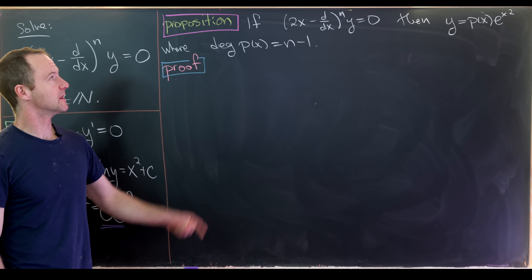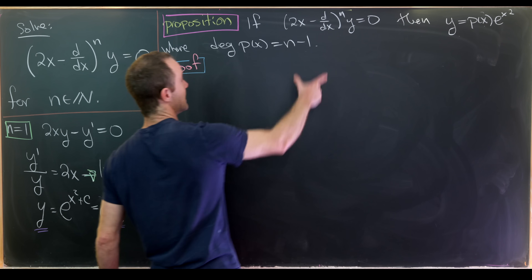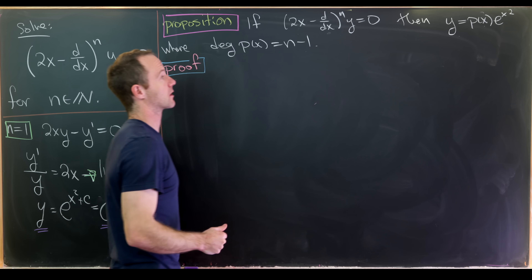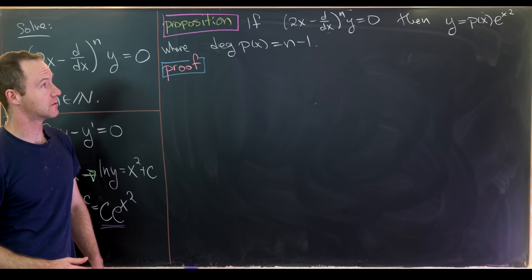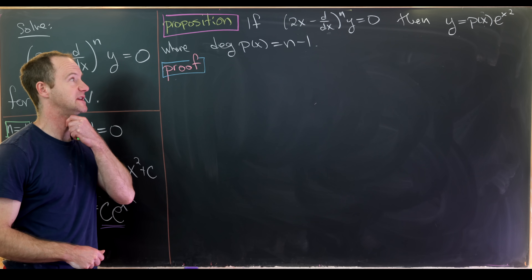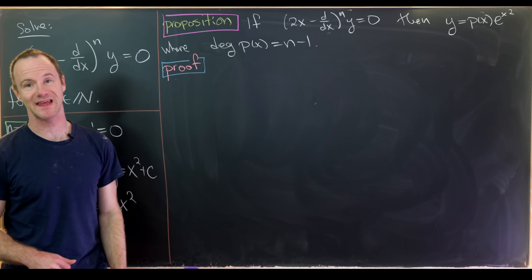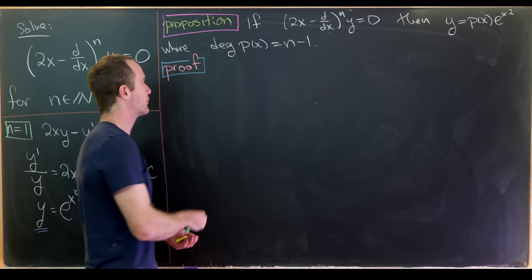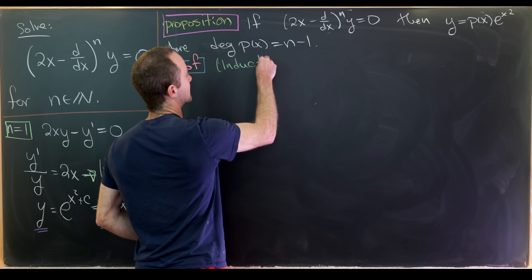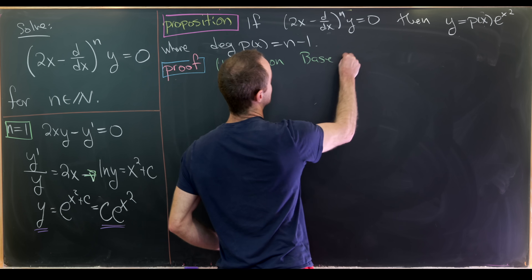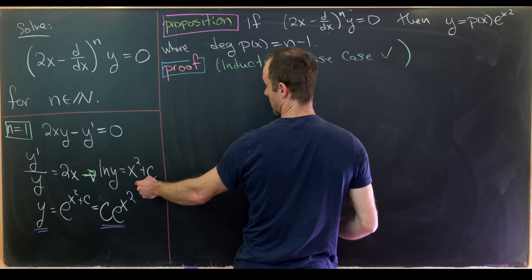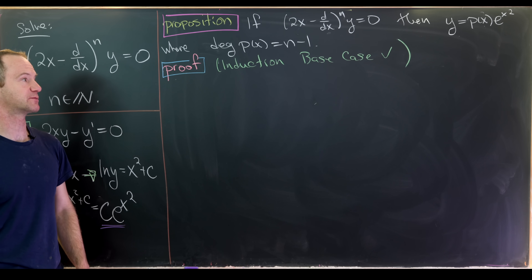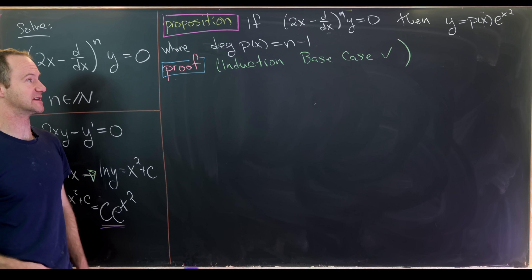Here is the proposition: if (2x − d/dx)^n acting on y equals 0, then y equals a polynomial times e to the x squared, where the polynomial has degree n minus 1 — one less than the exponent. We'll prove this by induction. The base case, n equals 1, is already done, and the n equals 2 case provided motivation for the guess.